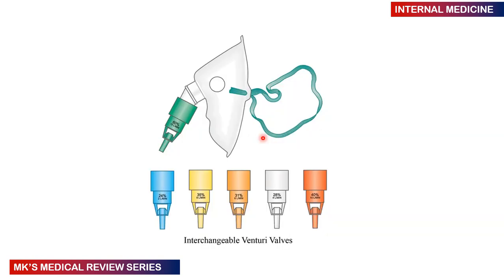To recap the Venturi mask colors: 24% up to 2 liters per minute; 28% up to 4 liters per minute; 31% up to 6 liters per minute; 35% up to 8 liters per minute; 40% up to 10 liters per minute; and 60% up to 15 liters per minute.